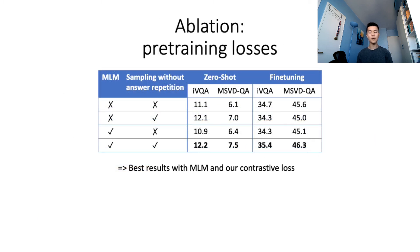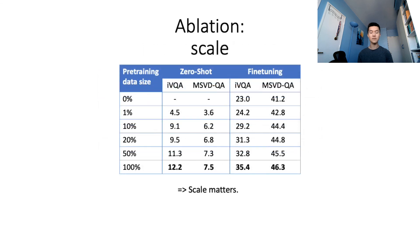We finally discuss ablation studies. Best results are obtained when adding a masked language modeling objective and removing duplicate answers in the sampling process of our contrastive loss. We believe sampling the same answer multiple times leads to worse results because of different answer distributions between pre-training and downstream datasets. We also find that scale — as measured by the number of videos used for pre-training — is an important factor of performance in both zero-shot and fine-tuning settings, demonstrating the scalability of our approach.